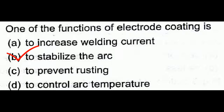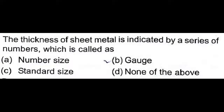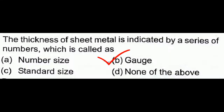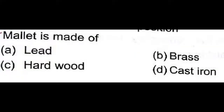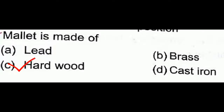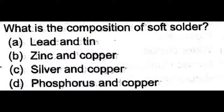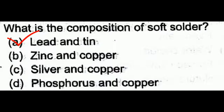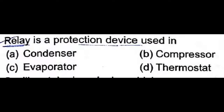One function of electrode coating is to stabilize the arc — option B is correct. The thickness of sheet metal is indicated by a series of numbers called gauge. A mallet is used to deliver light blows on a job and is made of hard wood — option C is correct.